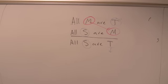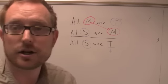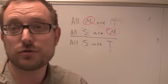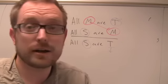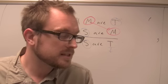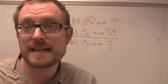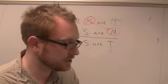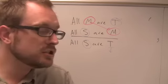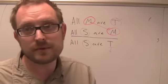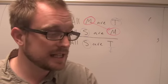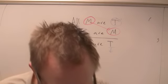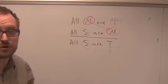There are four rules to make sure an argument is in standard form, located on page 244 of your book. First, all statements must be standard form categorical propositions. Second, the two occurrences of each term must be identical — you can't compare non-like terms. Third, each term is used in the same sense throughout the argument. Fourth, the major premise is listed first, the minor premise is listed second, and the conclusion is last.